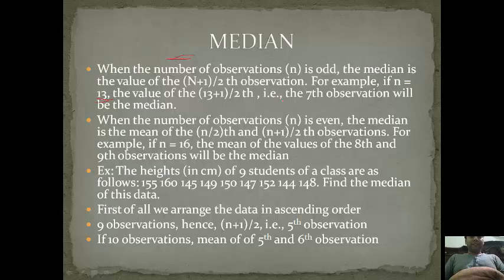And if it is 16, if n is 16, then 16/2 will be 8. So 8 will not be the answer, but it will be the mean of (16/2) and (16+1)/2. So this means that 8th observation and 9th observation mean will be the median of that series. Let's solve by example, it will become clear.